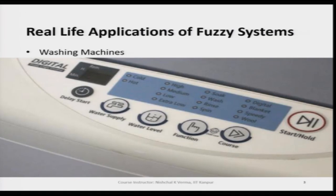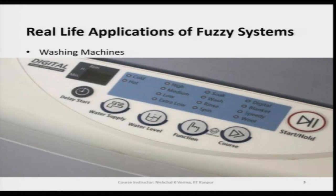In these machines we see lots of linguistic terms. For water supply we see 'cold' and 'hot'; for water levels we select 'high', 'medium', 'low', 'extra low'; and for functions like 'soak', 'wash', 'rinse', 'spin'; and for course we see 'digital', 'blanket', 'speedy', 'wool'. So we see lots of linguistic terms here.